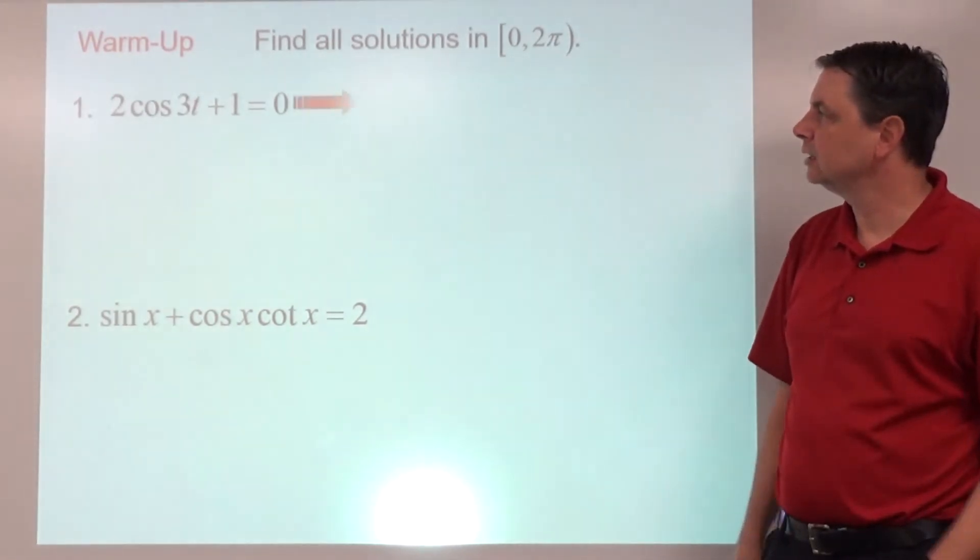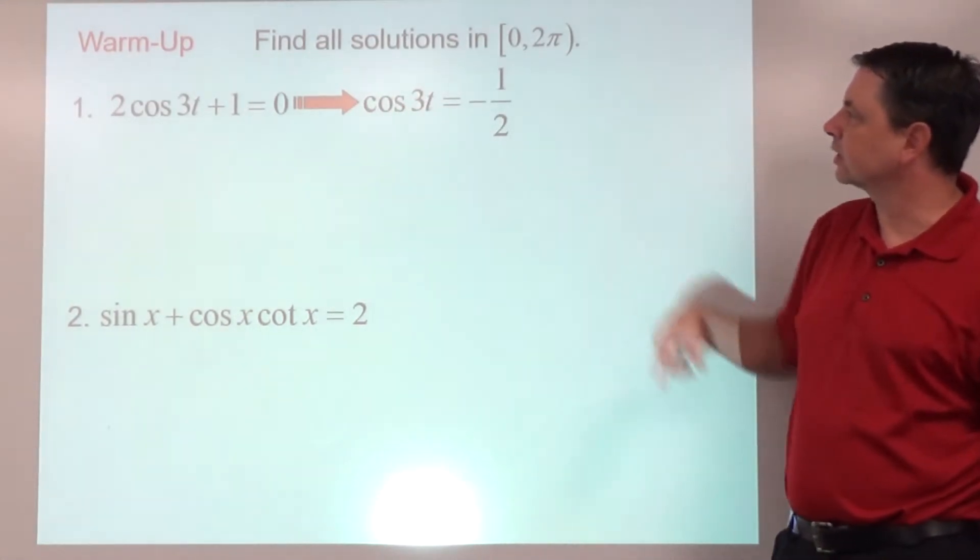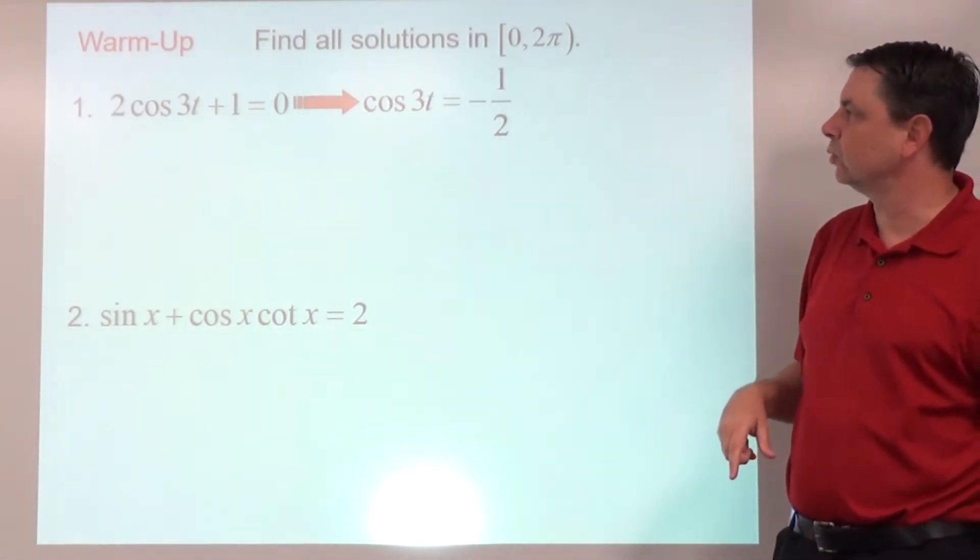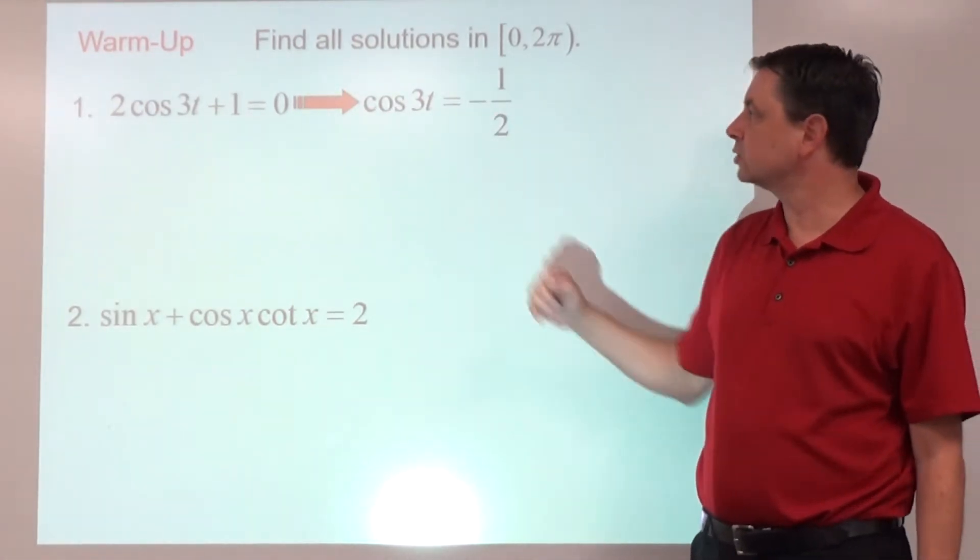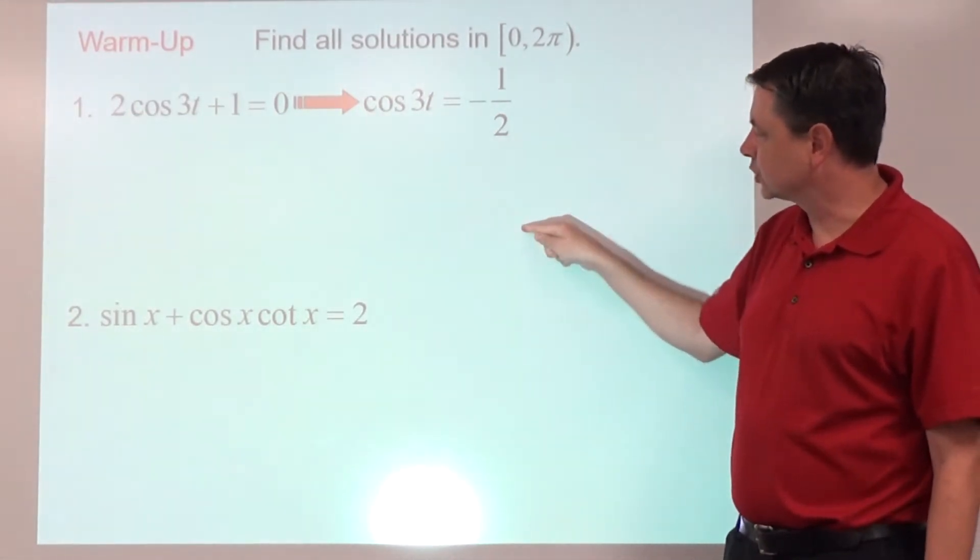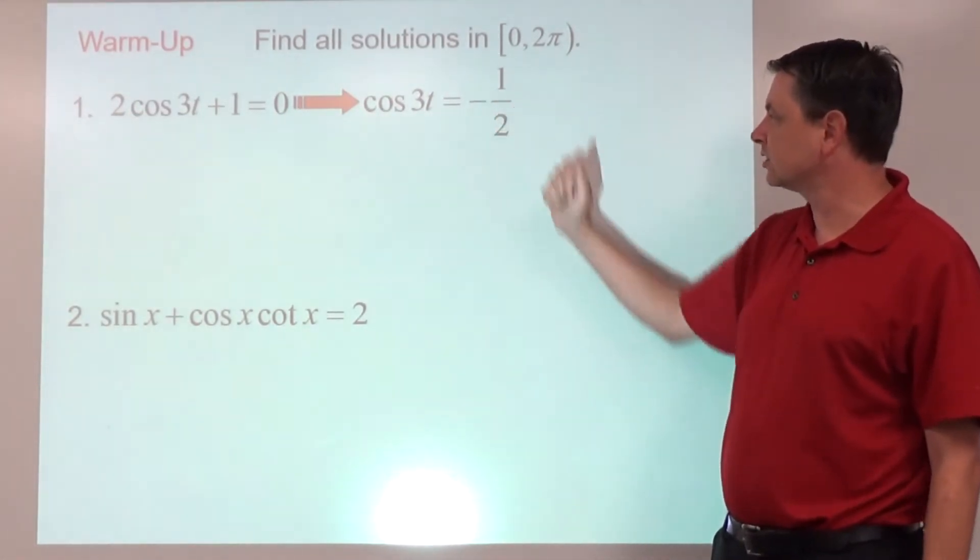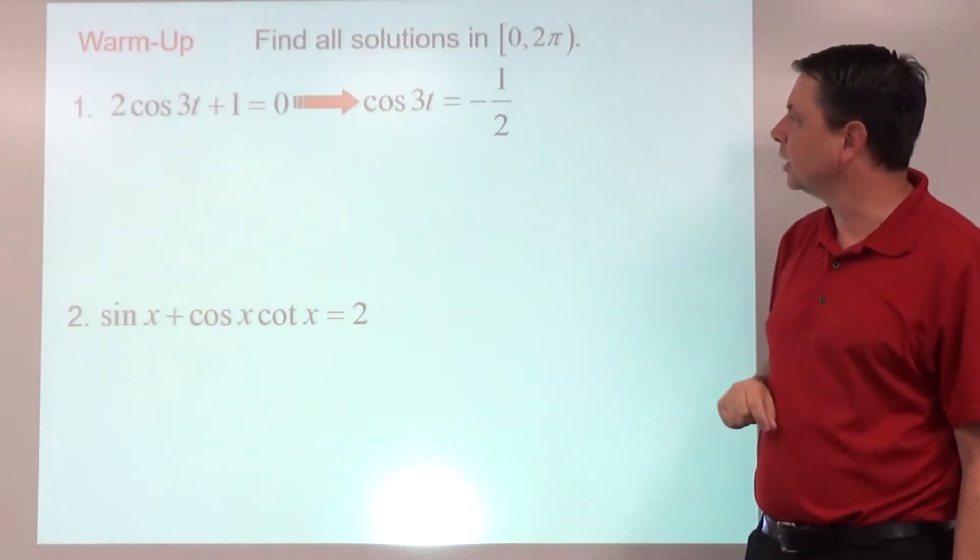Alright, number one. If we solve for cosine of 3t, cosine of 3t is negative one half. Then if we think in terms of unit circle for cosine, that's going to be in quadrants 2 and 3. And one half is going short and then tall, so we're talking about pi over 3, so 2π over 3 and 4π over 3.